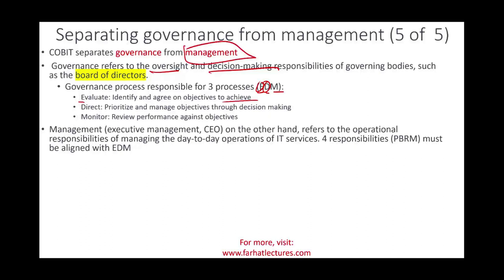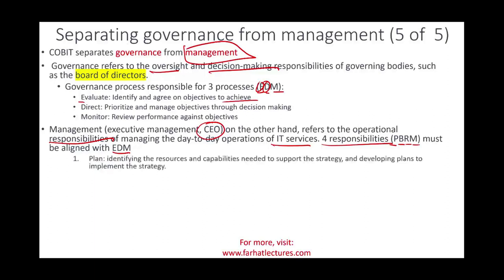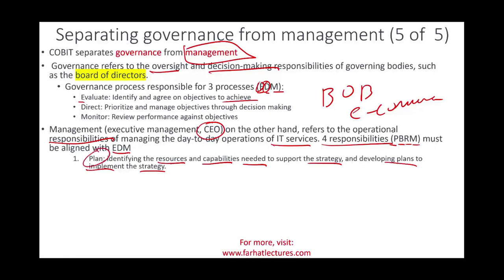Governance and management must be separate. Management — executive management, the CEO and employees — refers to operational responsibilities, carrying the day-to-day activities of the company. Management has four responsibilities abbreviated as PBRM, which must be aligned with EDM. Plan: identify the resources and capabilities needed to support the strategy and develop plans to implement it. For example, if the board says we need a new e-commerce site, management plans — do we have the resources and capabilities internally, or do we need to outsource?